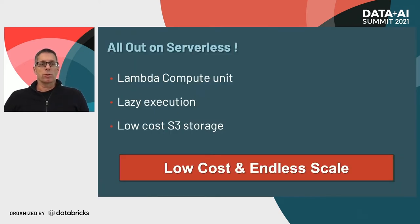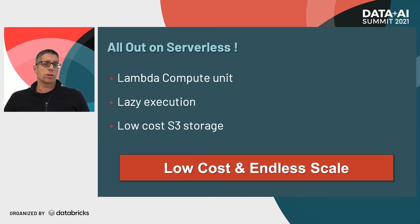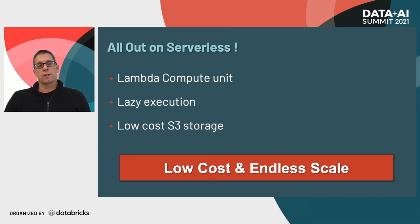The first decision we made was to go all out on serverless. We decided to use Lambda functions as the basic compute unit — the serverless compute unit of AWS. We chose lazy execution, meaning we don't process any data until it's needed, so we don't waste resources processing data nobody needs. And we moved storage from a relational database to low-cost S3 storage. At the end of the day, we got very low cost and endless scale.